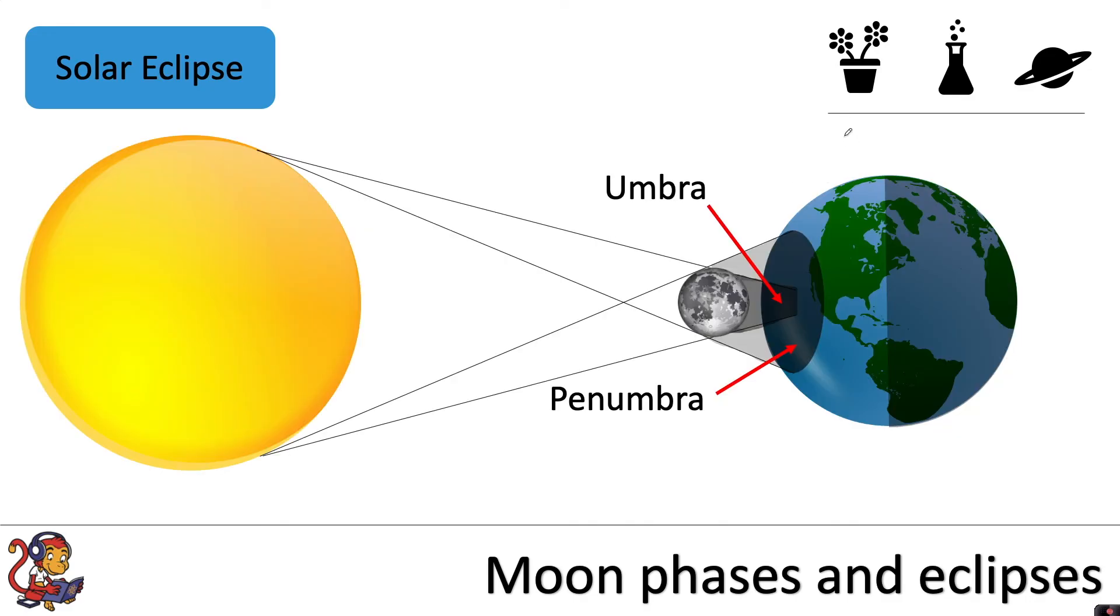And as the Moon is completing its orbit if it's perfectly aligned which very rarely happens but if it becomes perfectly aligned you will see the Moon appear to cover the Sun and it will cover part of the Earth in a shadow.